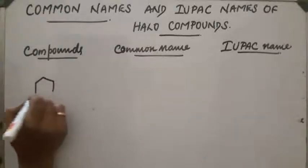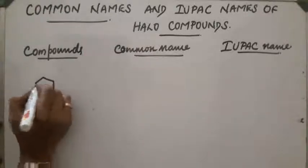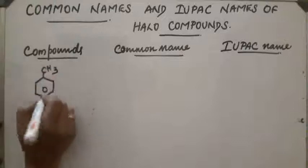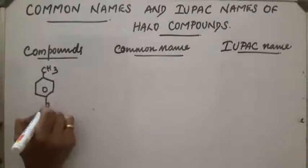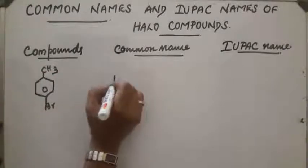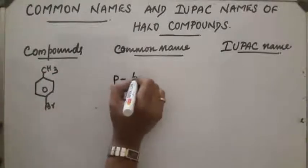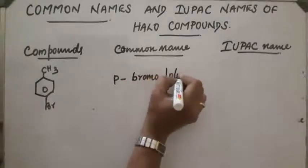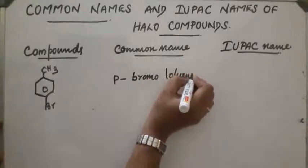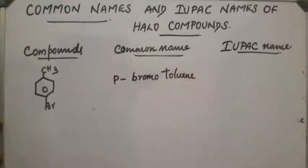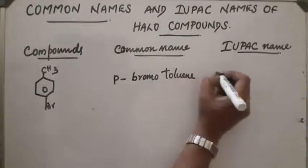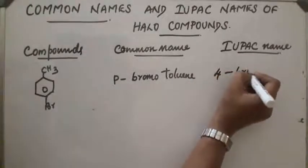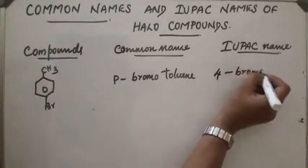Next compound: bromine is at the para position, so the common name is para-bromotoluene. The IUPAC name uses the fourth position: 4-bromotoluene.